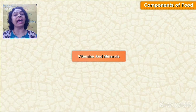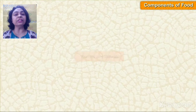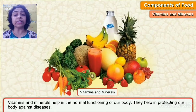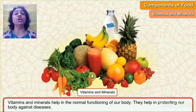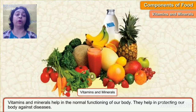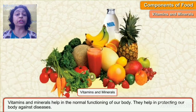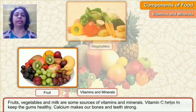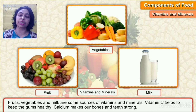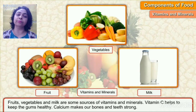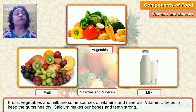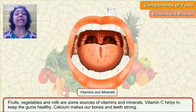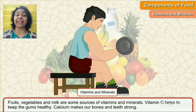The main sources of vitamins and minerals are fresh fruits and vegetables. Vitamins help in the normal functioning of our body and help in protecting our body against diseases. Fruits, vegetables, and milk are some sources of vitamins and minerals. Vitamin C keeps our gums healthy, and calcium makes our bones and teeth strong.